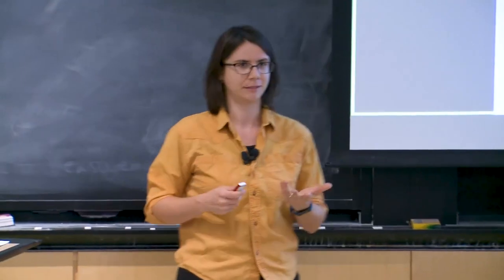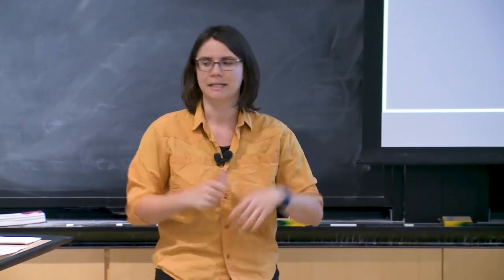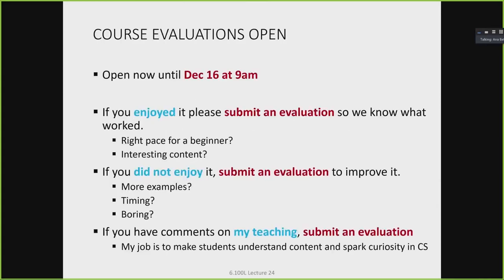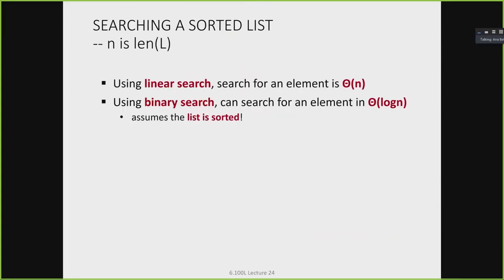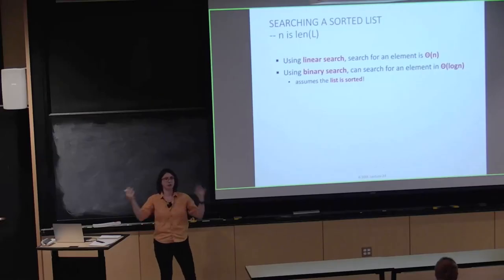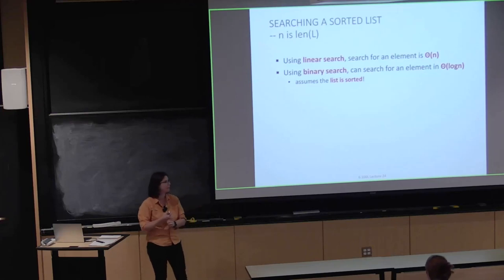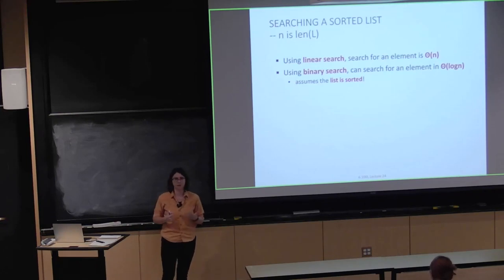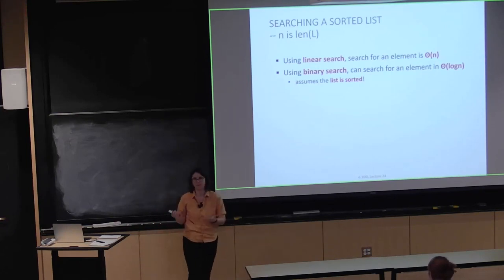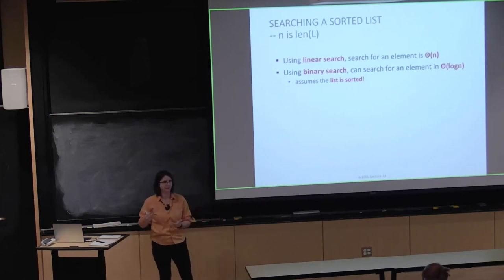Today marks the last lecture on the subject of sorting algorithms, or on the subject of complexity. Let's remember where we left off at the end of last lecture. We tried to look for elements within a list. This is a really common problem in computer science, where the list is basically a large data set — biology information, physical experimental data, some big file — and one of the most common things you might want to do is search for something within that file.